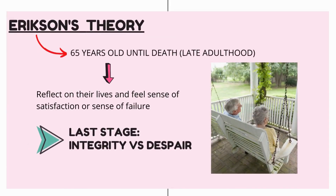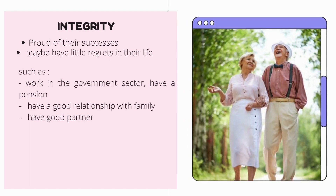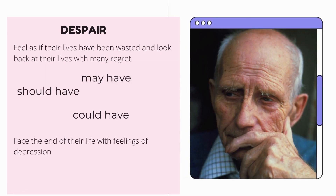The theory of human development — Erikson's impact. Erikson's theory stated that people aged 65 years and older, called late adulthood, tend to reflect on their life and feel a sense of satisfaction or sense of failure. This was stated in the last stage of Erikson's eighth stage of psychosocial development, called integrity versus despair. The sense of integrity happens when they are proud of their successes, enabling them to look back on their life with little regret — such as people in the government sector who have a pension, or people who have good relationships with family and a partner. The sense of despair happens when people feel their life has been wasted and look back with many regrets, concentrating on what may have, should have, and could have happened.